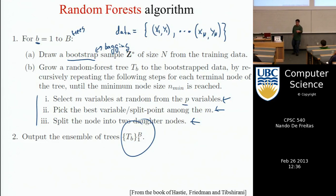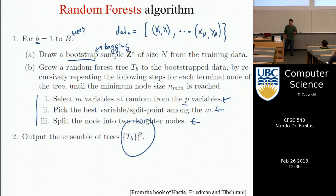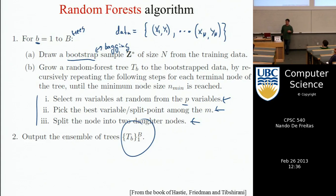The first step is to draw a bootstrap sample of your data, which means you take your dataset of endpoints and sample from it with replacement. Usually you sample endpoints — you can sample less or oversample if you want — but this is an additional source of randomness in addition to what's in the node optimization procedure. It encourages the trees to be different from each other, which is one of the key strengths of random forests. You want many trees that are all reasonably good predictors, but you want them to make different mistakes so that when you average them and take a majority vote, you end up with the right answer more often than any individual tree.